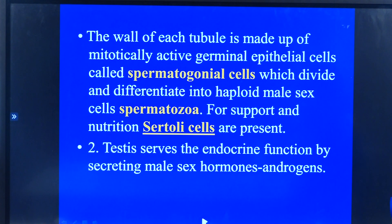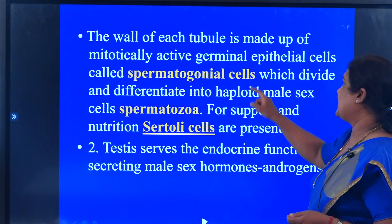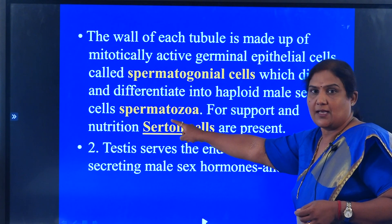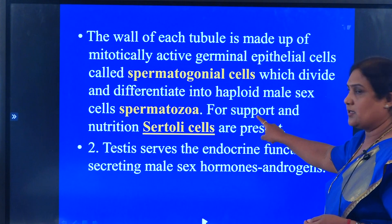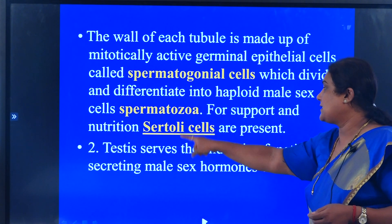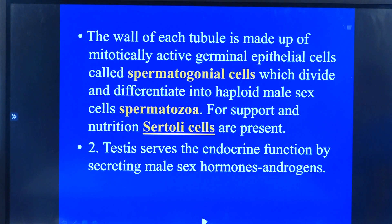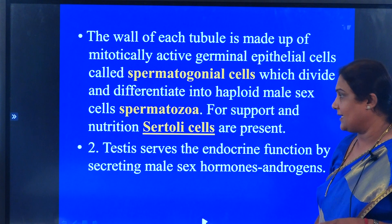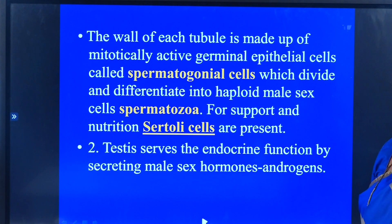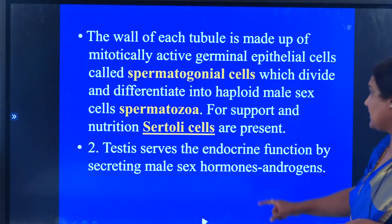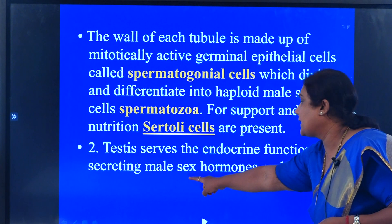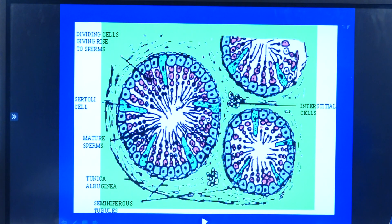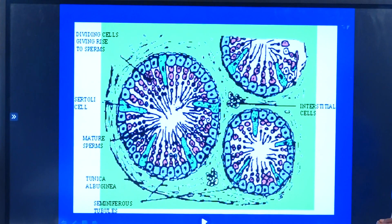The wall of each tubule is made up of mitotically active germinal epithelial cells, called spermatogonial cells, which divide and differentiate into the haploid male sex cells called spermatozoa. For support and nutrition of these cells, there are the Sertoli cells, which are also present in the lining of the seminiferous tubules — they are big in size and slightly irregular. The second function performed by the testes is that it acts as an endocrine gland, secreting the male sex hormones called androgens.